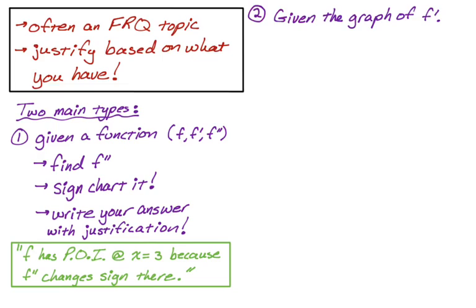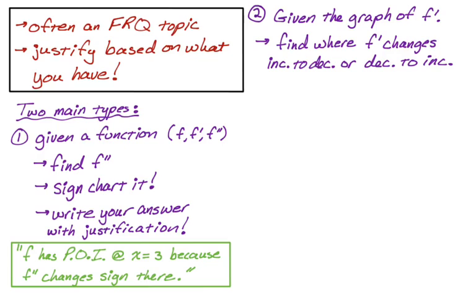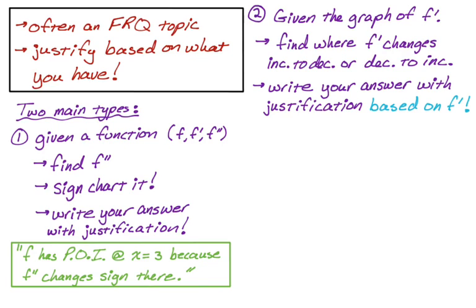A second type is you might be given the graph of f prime — this is actually the most common thing to happen on the FRQs. You're going to look at the graph of f prime and find where f prime changes from increasing to decreasing or decreasing to increasing. That might be at a relative extrema, like a local maximum or minimum, or at some very strange point on the graph. We're going to strictly use f prime for our justifications, because using f double prime requires drawing extra connections and makes justifications much longer.